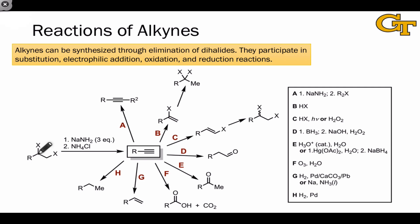We've seen previously that alkenes can be synthesized through elimination, and alkynes can likewise be synthesized through the elimination of a vicinal dihalide like this. In two sequential elimination steps, HX is first eliminated to form an alkenyl halide.